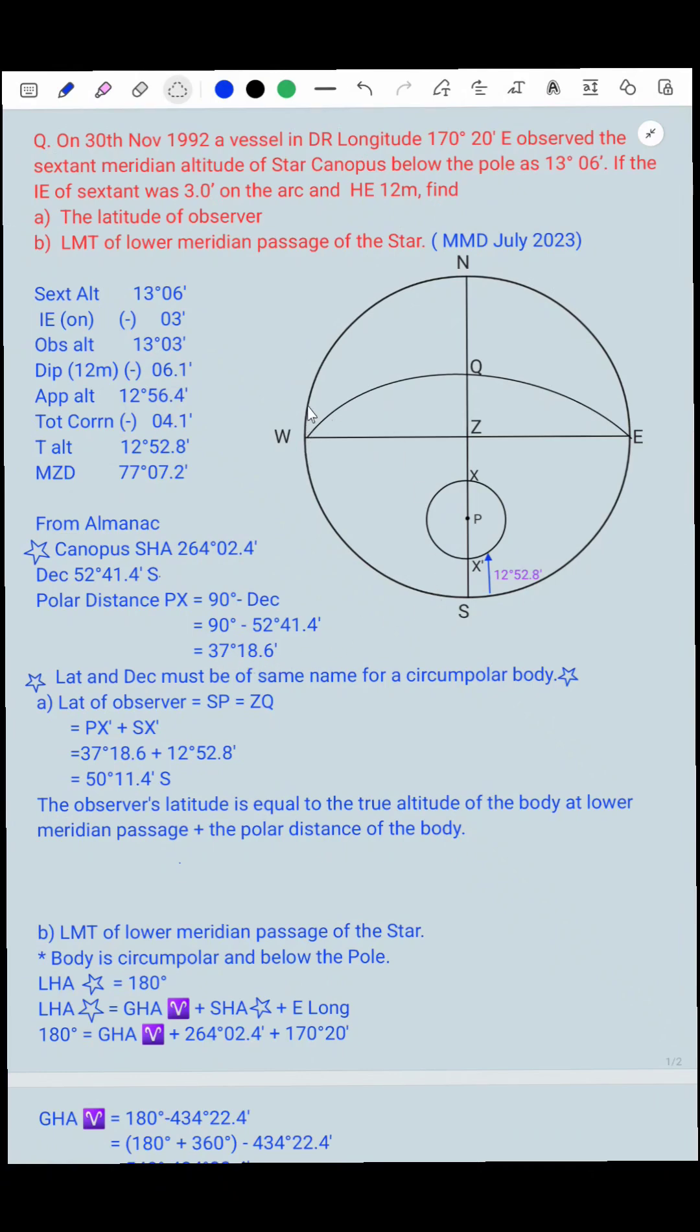So now we draw our rational horizon diagram and mark north, west, south, and we also draw WQE equinoctial. And we also have drawn one declination circle here, S and X dash. Why I have chosen the south pole is that since the declination is south, latitude and declination must be of same name for a circumpolar body. That is why I have taken the south pole.